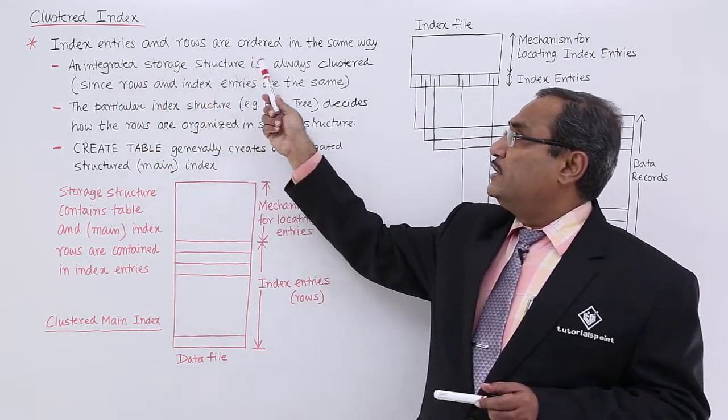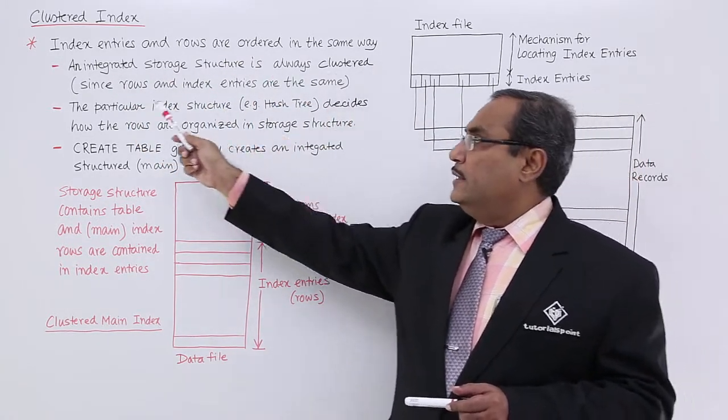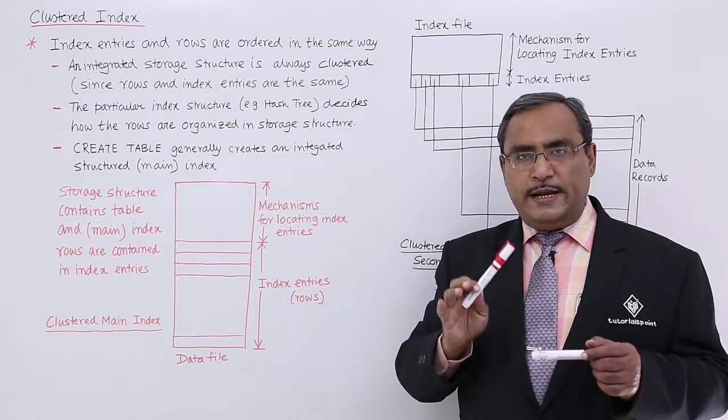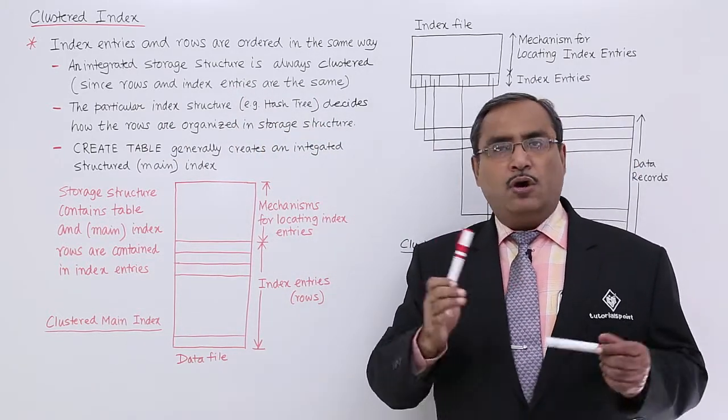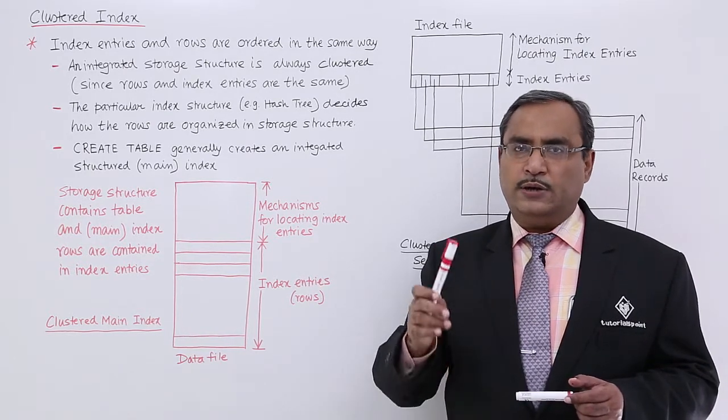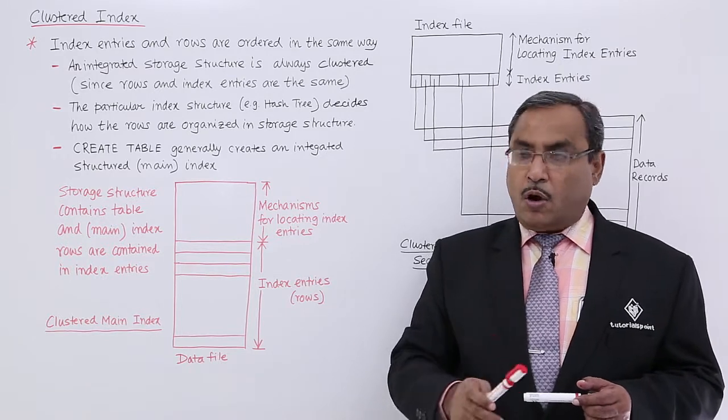An integrated storage structure is always clustered, since rows and index entries are the same. In an integrated storage structure, the index entries will be in the same order in which the rows occur.